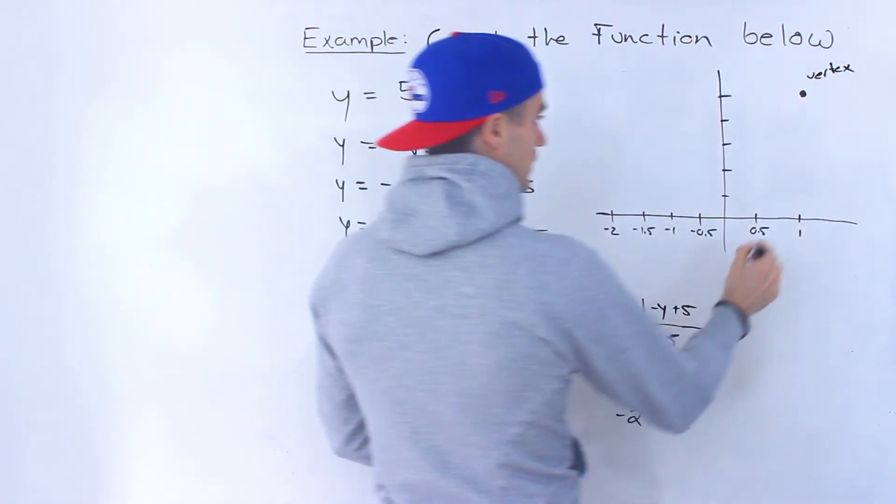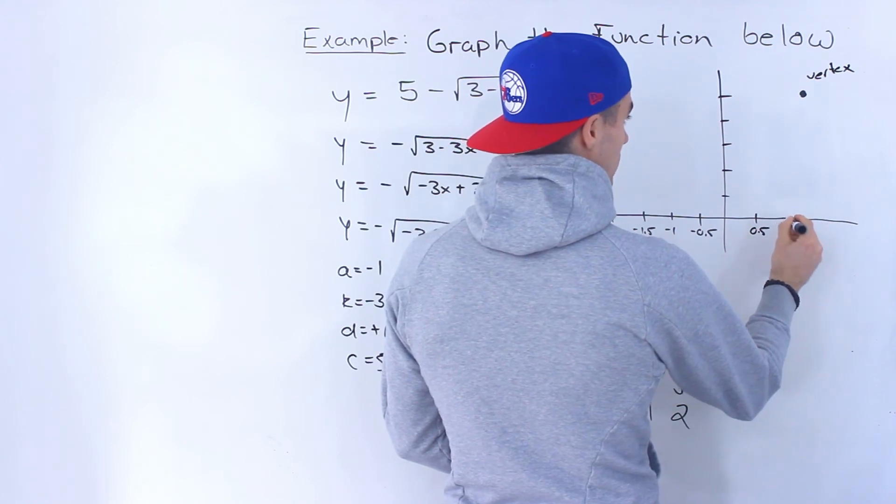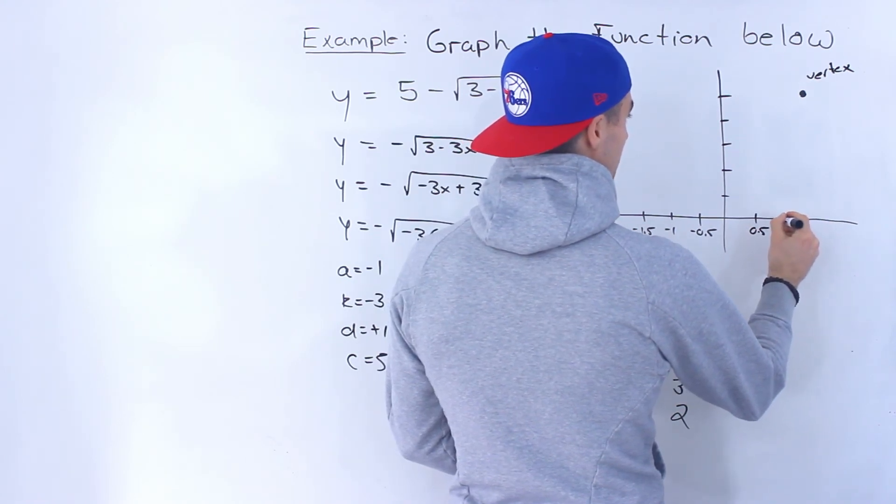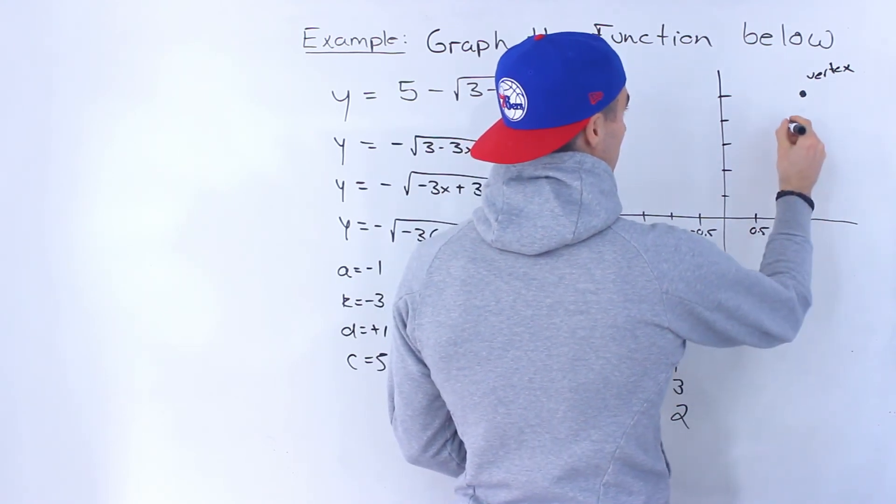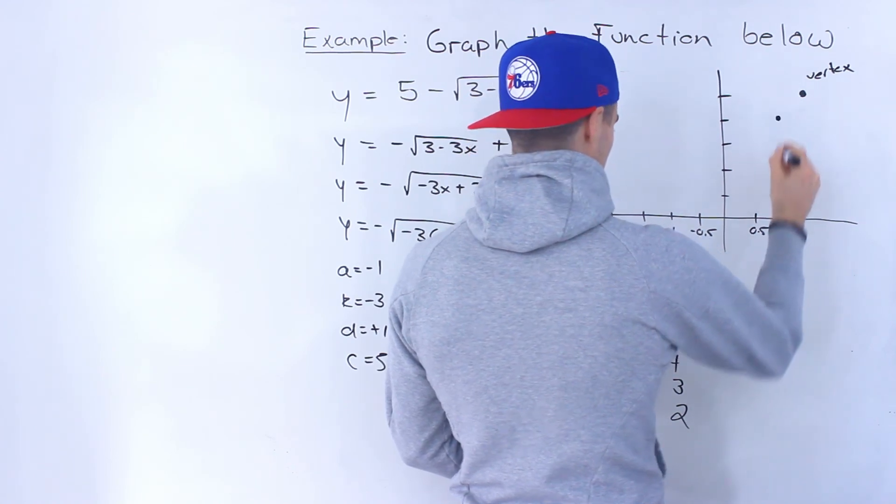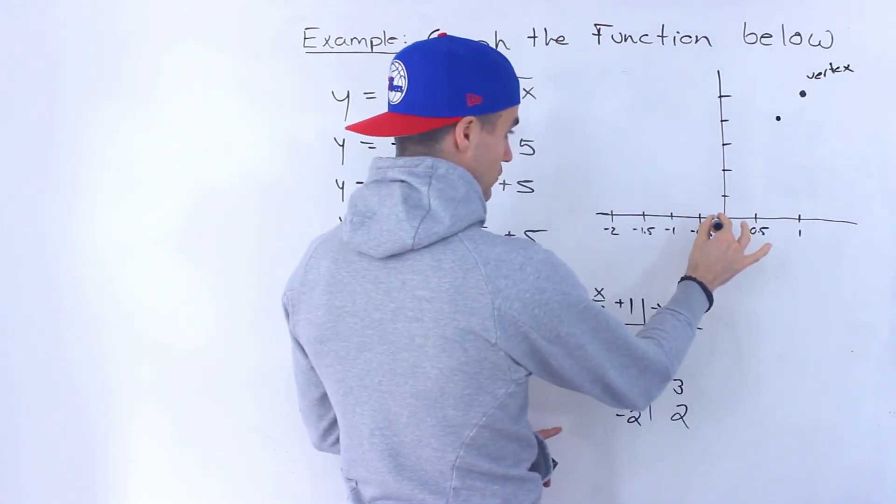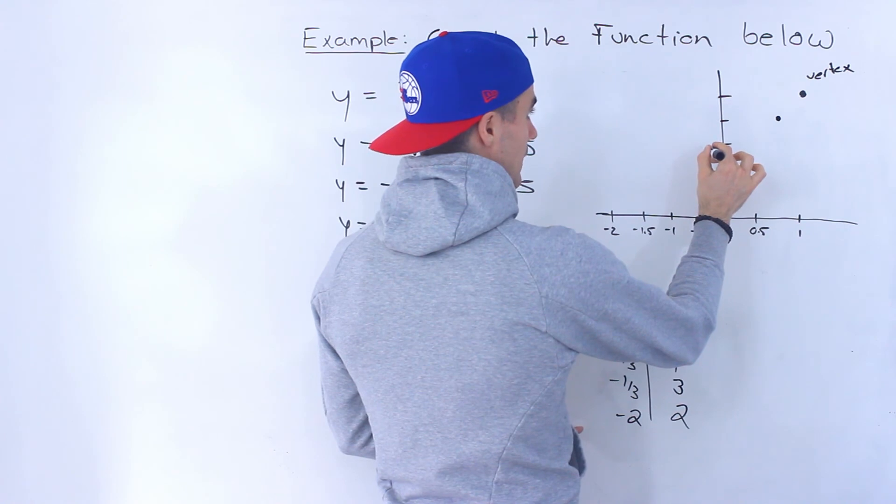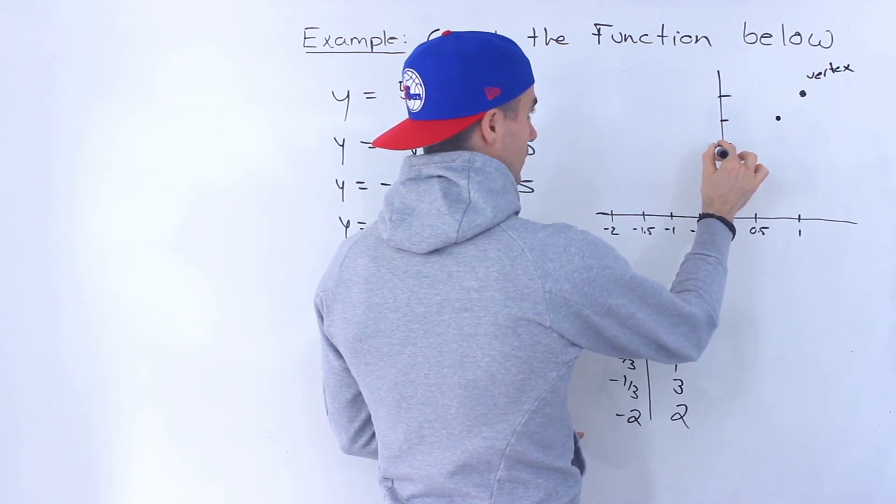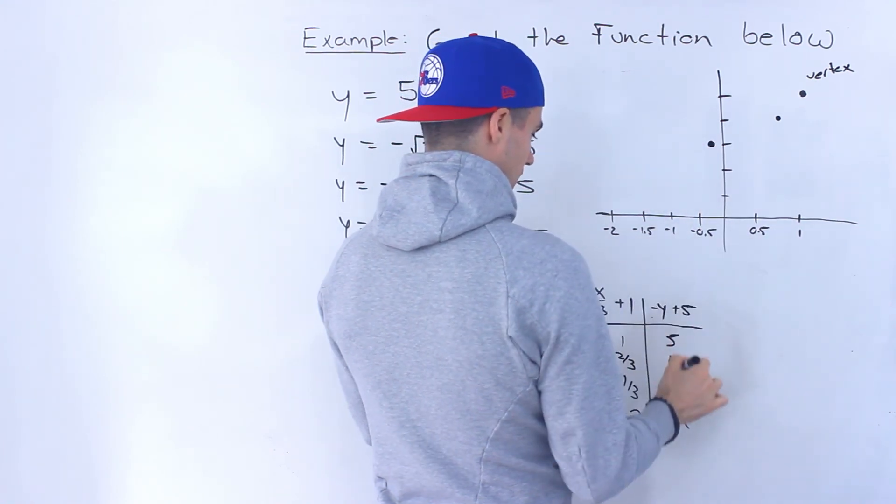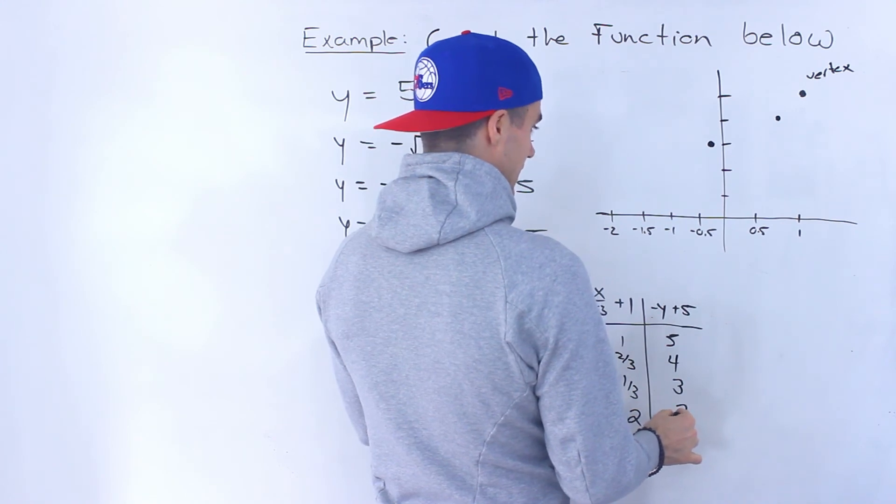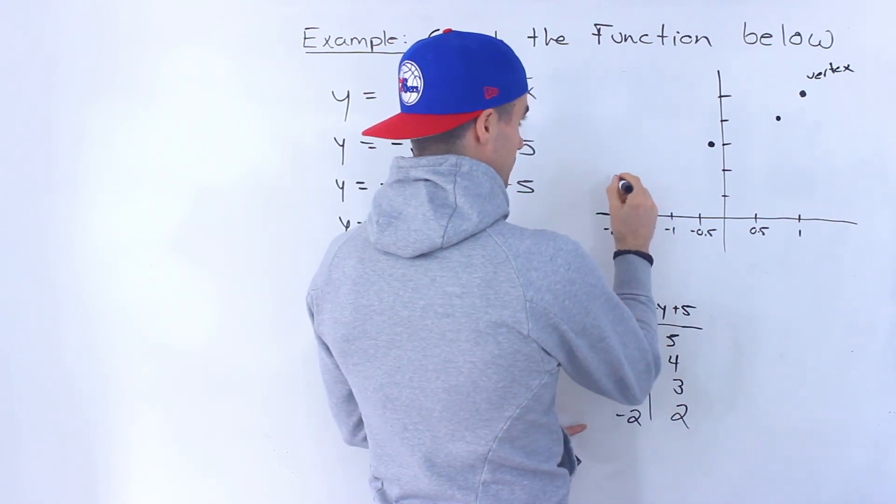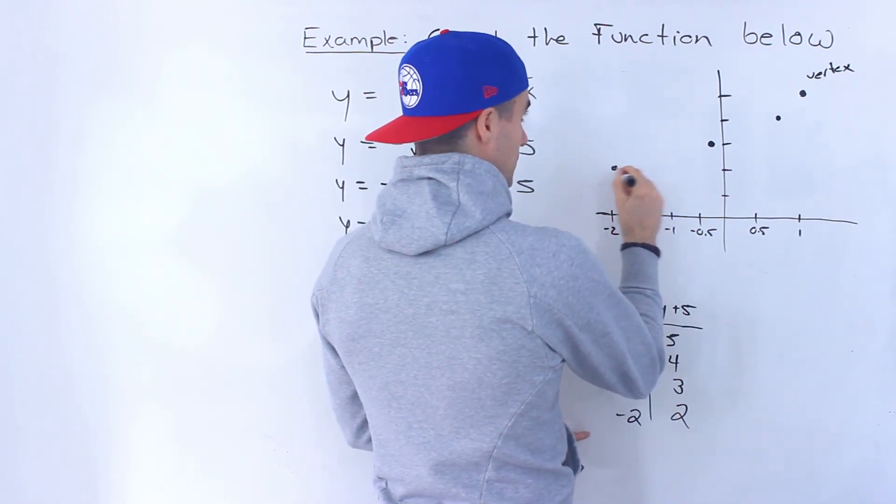Then we'll have 2 over 3 and 4, so 2 over 3 which would be over here, and 4. Then we'll have negative 1 over 3 and 3, that would be over here. And then we'll have negative 2 and 2, that would be over here.